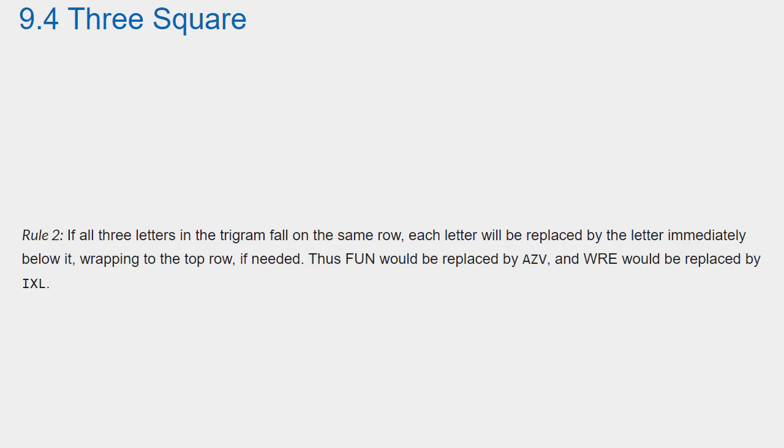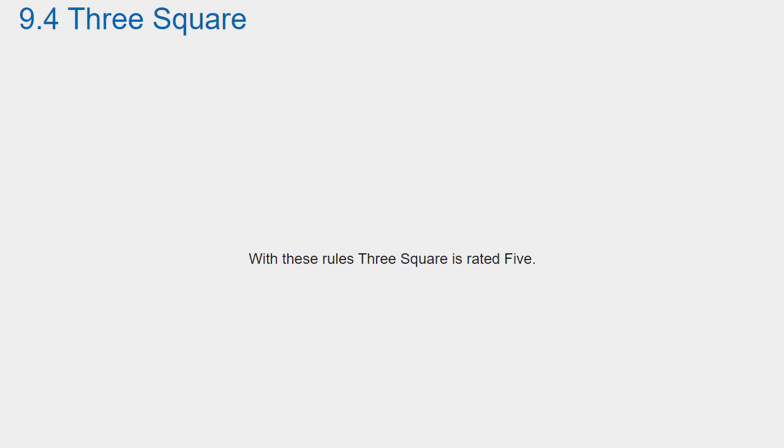Rule 2: If all three letters in the trigram fall on the same row, each letter will be replaced by the letter immediately below it, wrapping to the top row if needed. Thus, FUN would be replaced by AZV, and WRE would be replaced by IXL. With these rules, Three Square is rated 5.